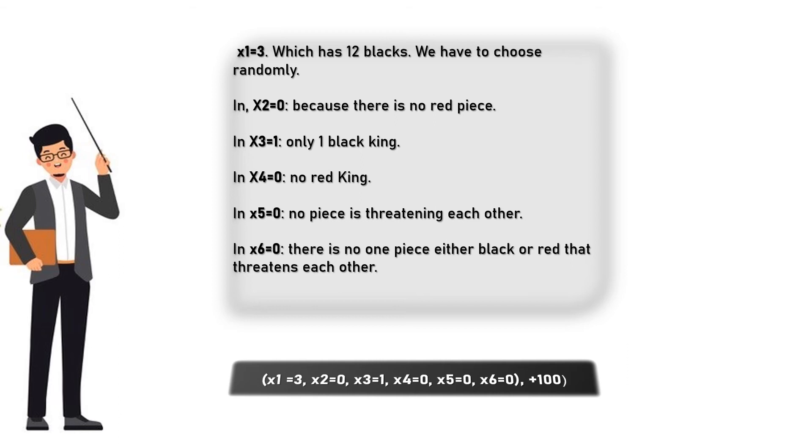In x4 equals 0, no red king. In x5 equals 0, no pieces threatening each other. In x6 equals 0, there is no one piece either black or red that threatens each other. To win the game we have to add 100. Then here comes: (x1=3, x2=0, x3=1, x4=0, x5=0, x6=0, +100).